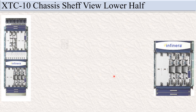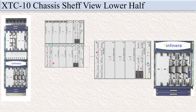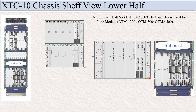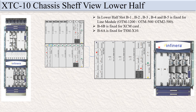XTC 10 chassis self-view, lower half. In the lower half, slot B1, B2, B3, B4, B5 is fixed for the line modules. B6A and B6B is there. B6B is fixed for the Axiom card and B6A is fixed for the TSM X10 card.